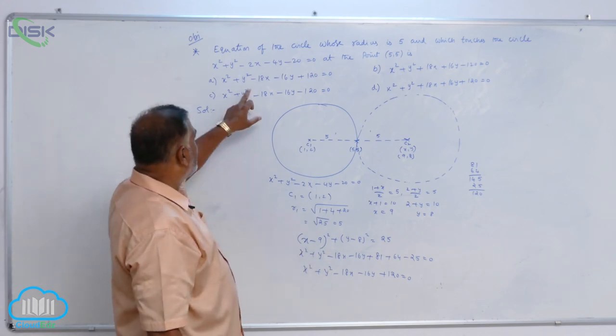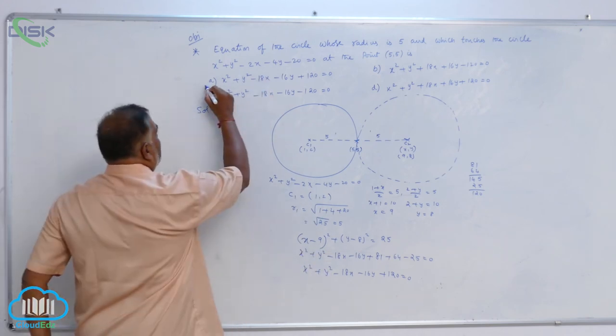So x² + y² - 18x - 16y + 120 = 0. From the options, you can check very clearly, I think option 1 is satisfying our answer.